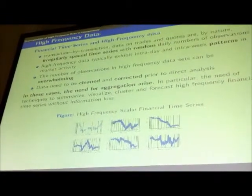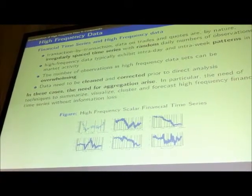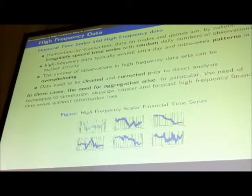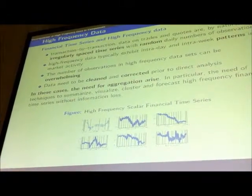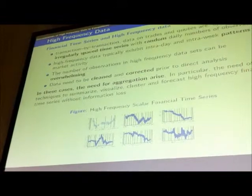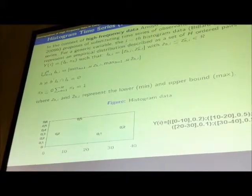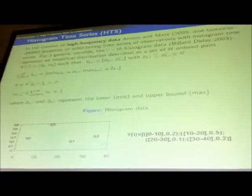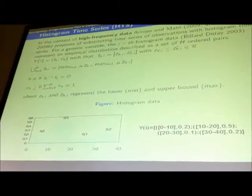Typically, this type of data needs to be cleaned and corrected. The most important point is the need for aggregation, because these data are too many to be handled directly. But the point is that there is an information loss — after aggregation we clearly lose a lot of different information. Various approaches exist in the literature, from the initial work of Bill Landon and the symbolic analysis approach.